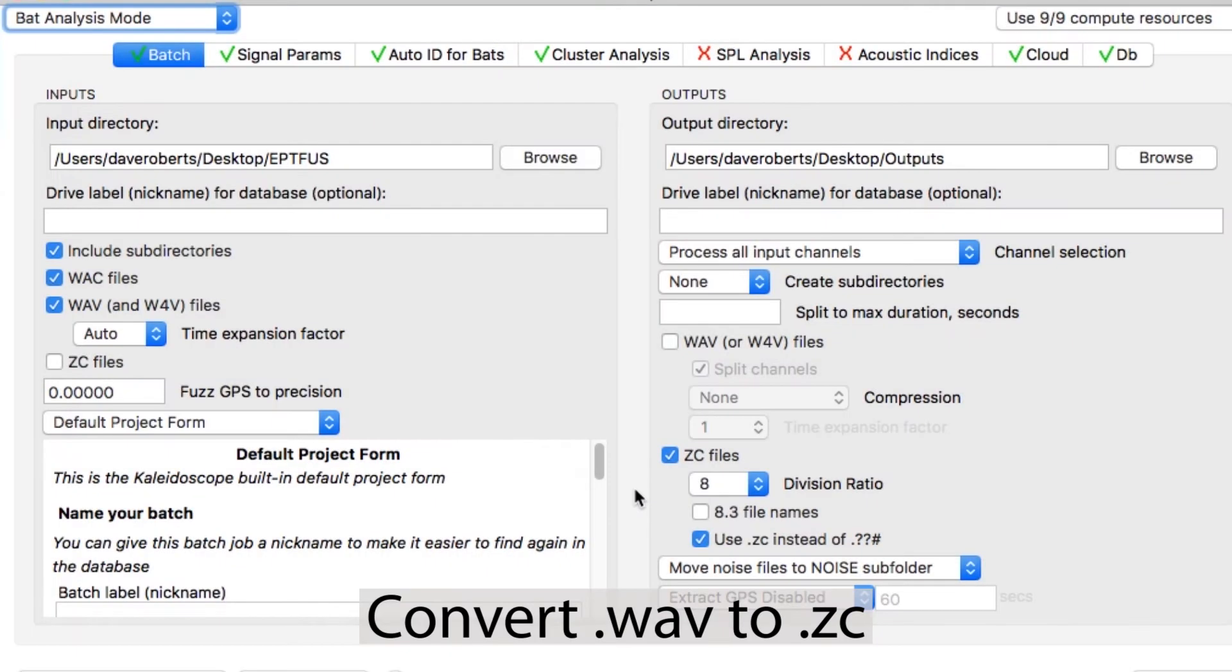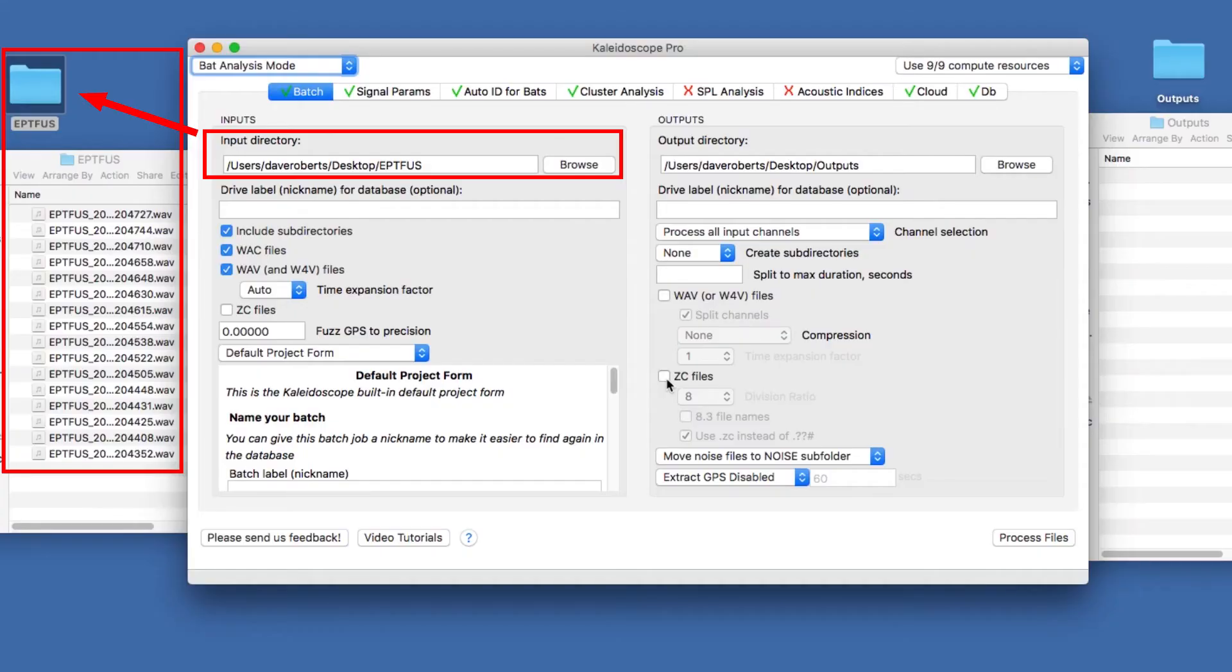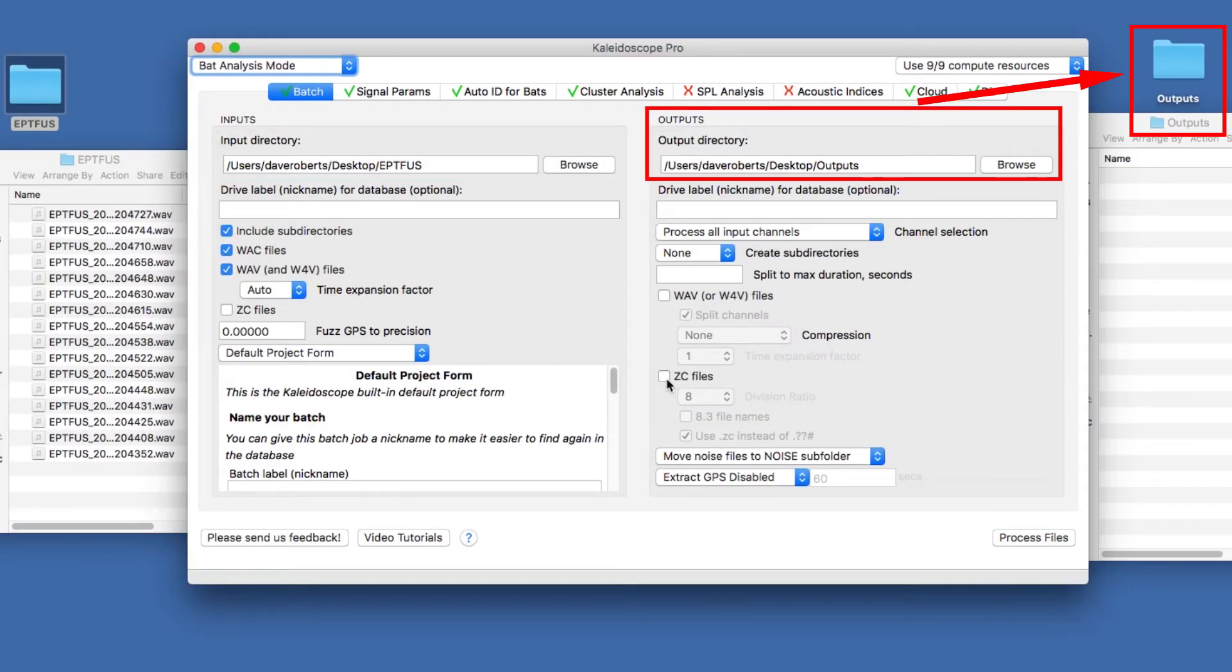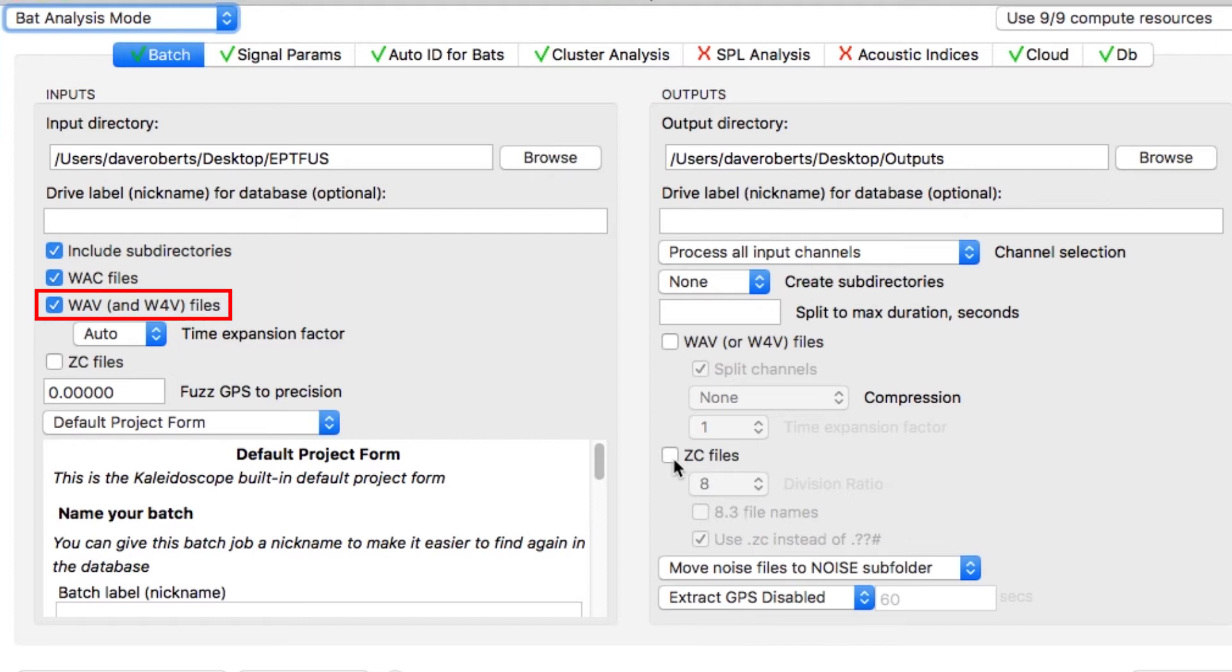To convert wave files to zero crossing format, select the input and output directories. Make sure wave files are checked for input. Check the output option to create zero crossing files.